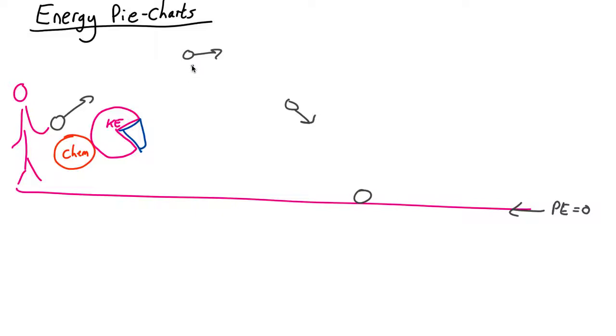At the top of the arc there will be less kinetic energy and more potential energy because it's higher. As it comes down again it'll look more like this.